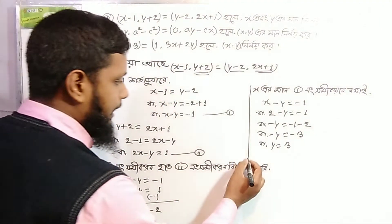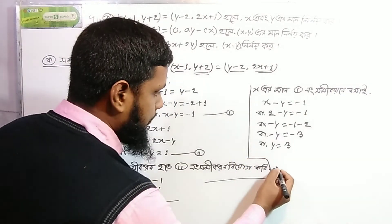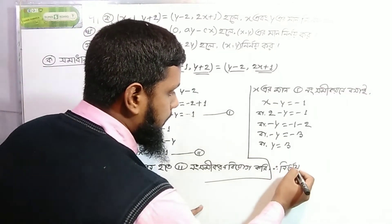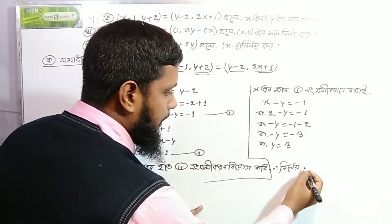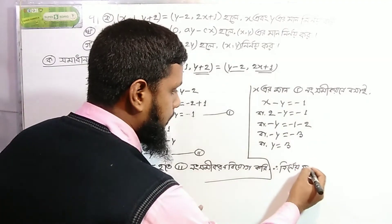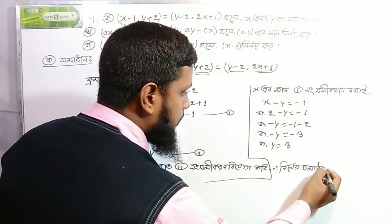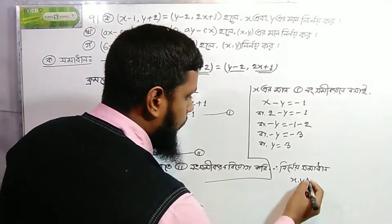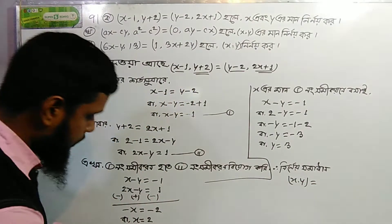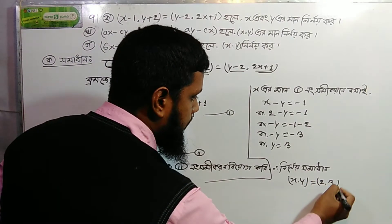If minus y is 3, then x is equal to y. The total: x is equal to y. x is 2, and y is 3.